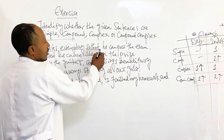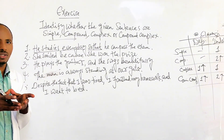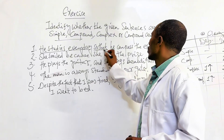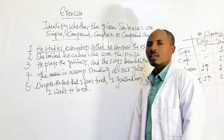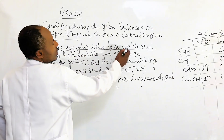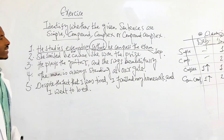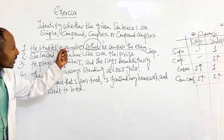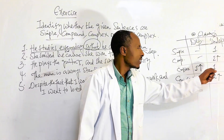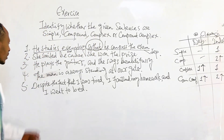'So that' is a subordinating connector, indicating purpose. 'So that he can pass the exam' is a dependent clause. So we have one independent clause and one dependent clause — therefore the sentence is complex.